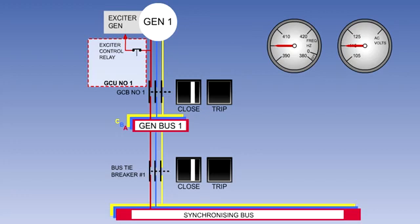The GCU also contains a relay, known as the exciter control relay, generator control relay, or generator field relay. This relay controls the exciter field current supply to the generator field.